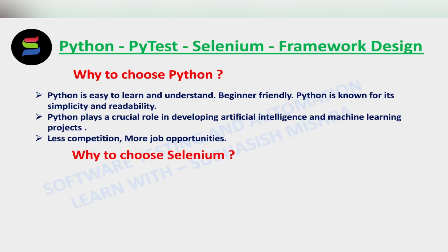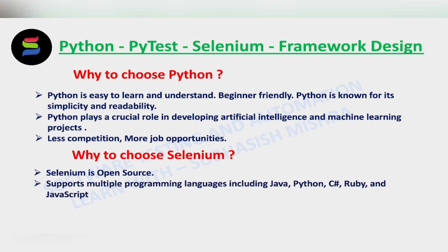Now we will see why to choose Selenium when there are different automation tools available in the market. I will explain the different features and advantages of using Selenium. The very first thing is Selenium is an open source tool, which means it is freely available and has a large community contributing to its development. It has robust support, frequent updates, and extensive documentation. You can download Selenium for free without paying anything and can start working on it right away. Selenium also supports multiple programming languages including Java, Python, C#, Ruby, and JavaScript. This flexibility allows teams to choose a language that best suits their existing skill set or project requirements.